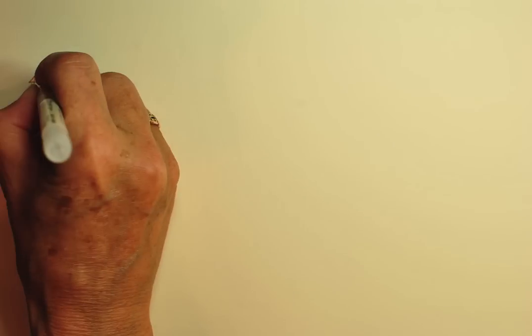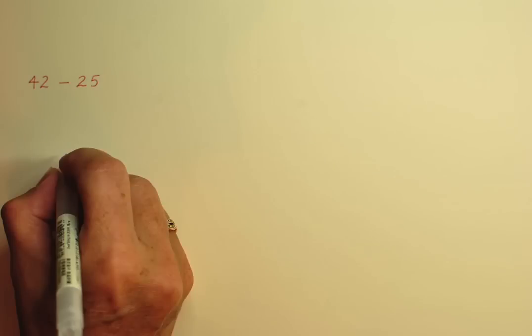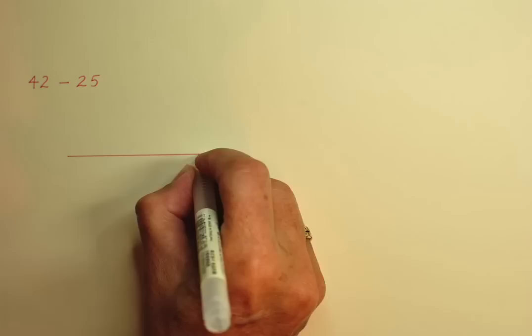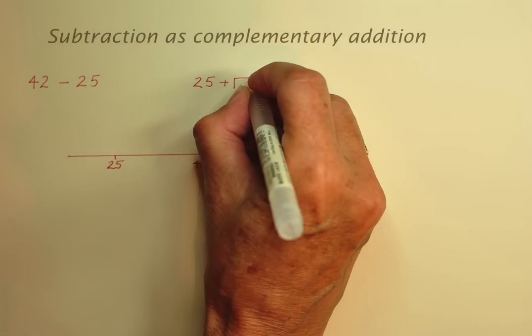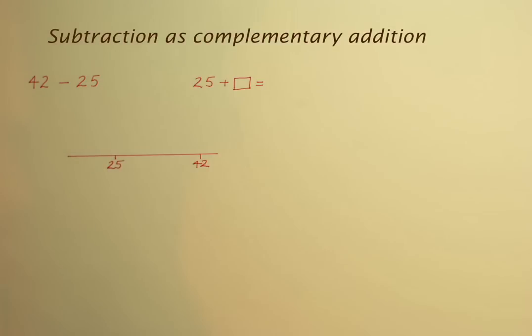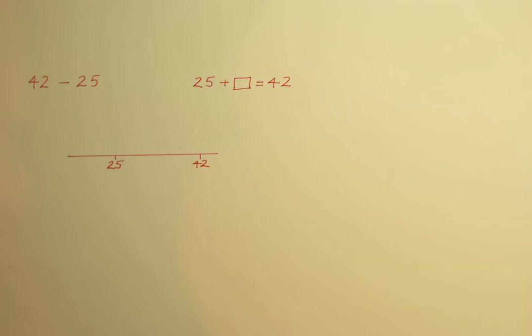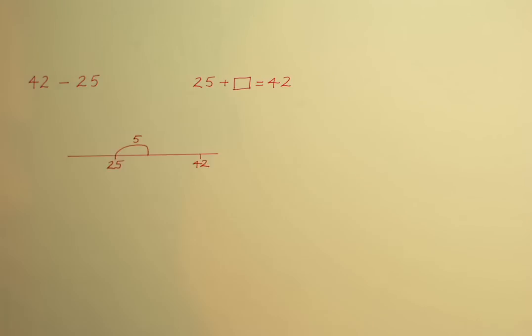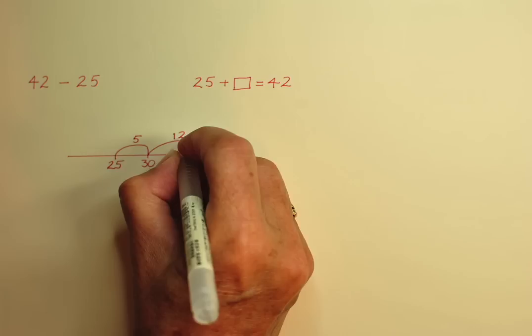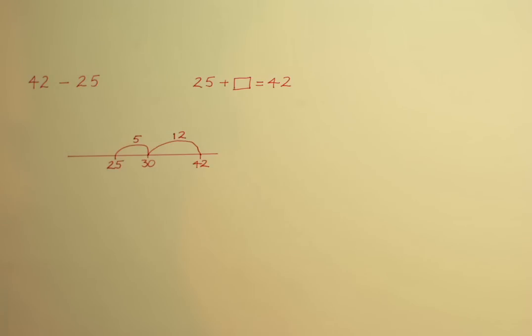Let's take a look at a subtraction with two two-digit numbers. It's just as easy as before. I'm going to solve the problem 42 minus 25 as if the question were formulated as 25 plus what is 42? Whichever way we think of the question, the answer lies in the difference between the numbers. From 25 we bridge to the next multiple of 10 which is 30 and from 30 we jump all the way to the target number 42. The solution can be found in two steps of calculation.